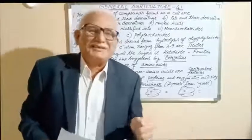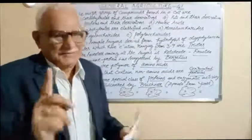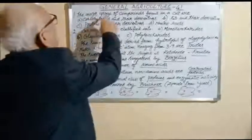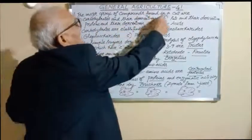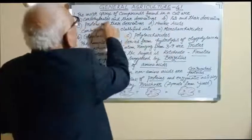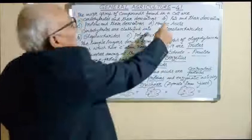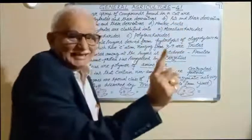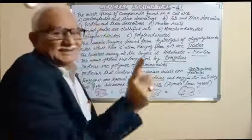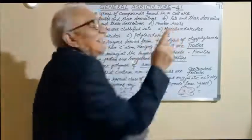Dear students, welcome to our class on General Agriculture 41. The major groups of compounds found in a cell are carbohydrates and their derivatives, fats and their derivatives, proteins and their derivatives, and nucleic acids.